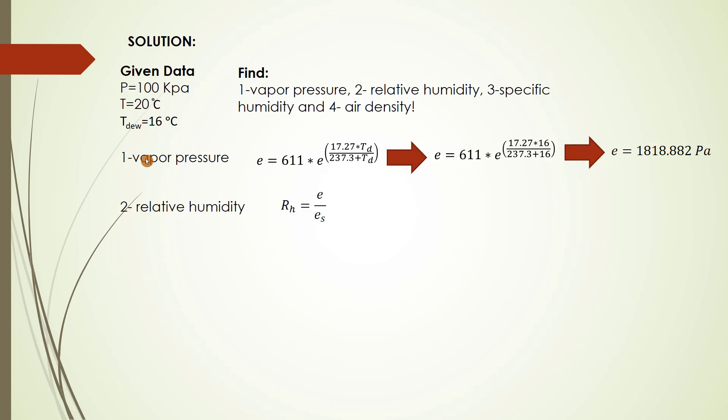The second one is relative humidity. The equation for relative humidity is R equals vapor pressure divided by saturated vapor pressure. We don't have the value of saturated vapor pressure, so we have to find it. That is the equation for saturated vapor pressure. It is the same as vapor pressure, but we use air temperature instead of dew temperature. Just put air temperature in the equation to find saturated vapor pressure.